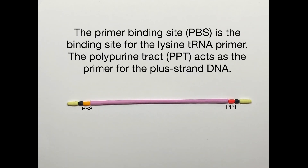Right next to the U5 region is the primer binding site, where the primer will first bind. HIV uses the 3' end of lysine-tRNA as a primer. Next to the U3 region is the polypurine tract, which acts as the primer for the plus-strand DNA that's generated. Plus-strand means that the DNA nucleotide sequence corresponds directly to the sequence of the RNA.